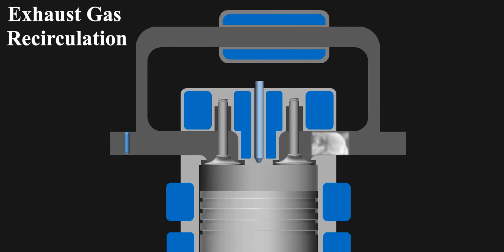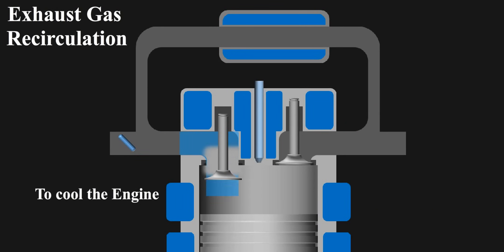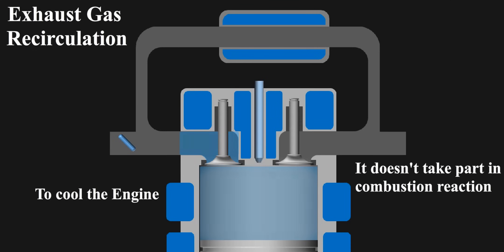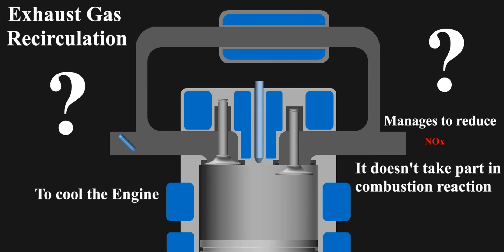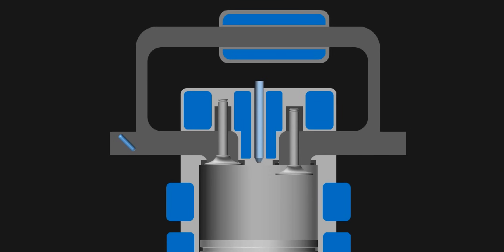The exhaust gas of an engine is recirculated back into its combustion chamber to actually cool it. Also, it does not take part in the combustion reaction, but still manages to reduce the emissions of NOx significantly. So how does that work? Let's explain in this video.